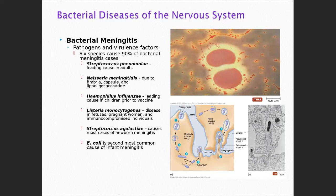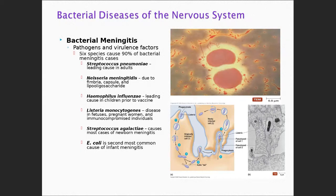Haemophilus influenzae used to really affect our kids, but the Hib vaccine has basically knocked this one off the map in the United States. In other countries, it's still a leading cause of meningitis in children. Listeria monocytogenes affects pregnant women but really affects the developing fetus. This organism likes colder temperatures — it was the infectious agent causing problems with Blue Bell ice cream a few years back. It can be associated with wounds but really can cause meningitis in pregnant women and be transferred to the developing fetus.